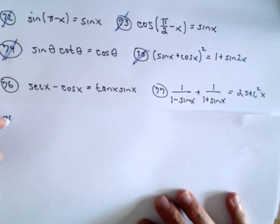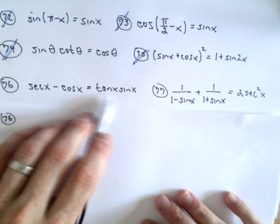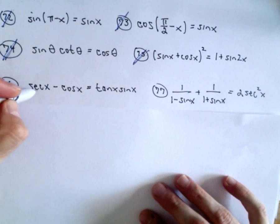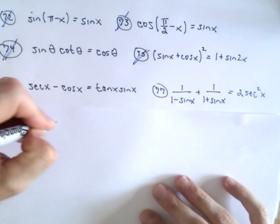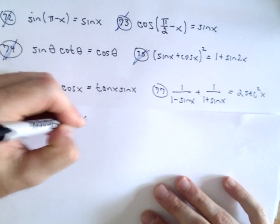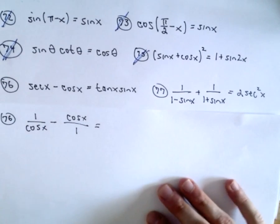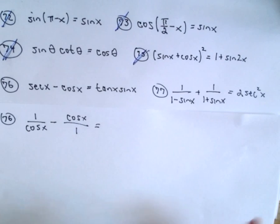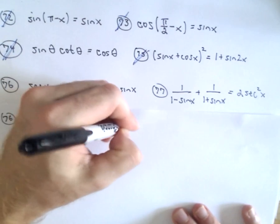Problem 76: We've got sec(x) - cos(x). We want to show that equals tan(x) times sin(x). Well recall that sec(x) is just 1/cos(x) minus cos(x). I'm going to put that over 1 just to get common denominators on the left side. And again, we're trying to show that equals tan(x) times sin(x).